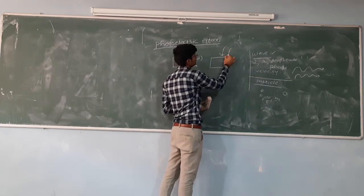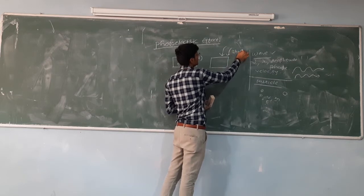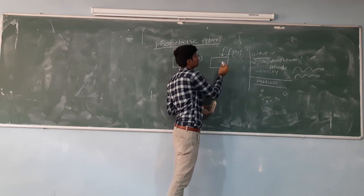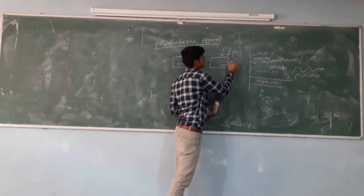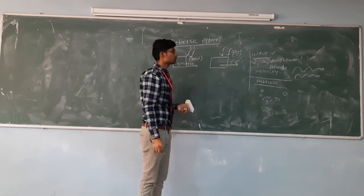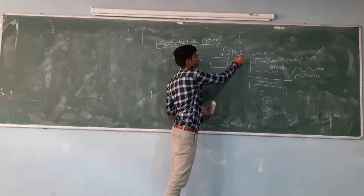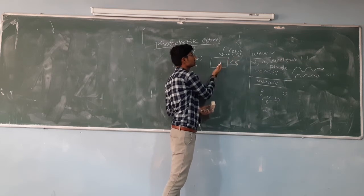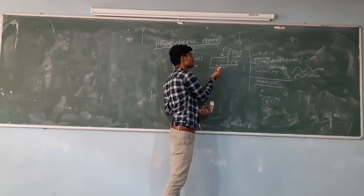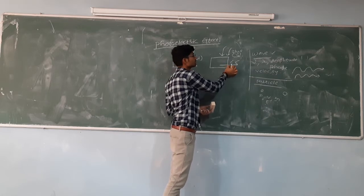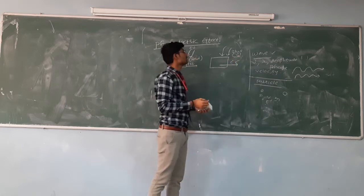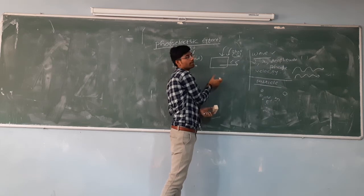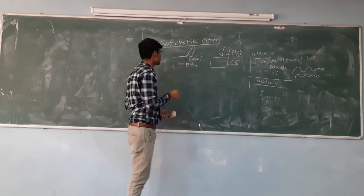Let us consider another metal surface on which we are incidenting a blue color frequency. If this frequency is sufficient for this particular metal, then it ejects some electrons from the metal surface. If the frequency is less than the minimum threshold frequency, then no ejection of electrons takes place from this metal surface.